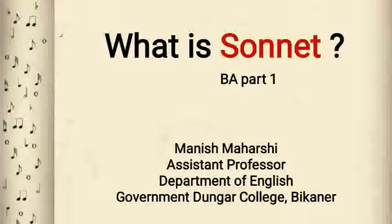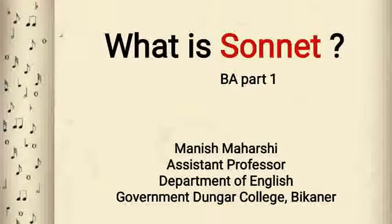The sonnet was introduced in England in the 16th century by Sir Thomas Wyatt and Henry Howard, the Earl of Surrey. These two English poets, after their return from a diplomatic mission in Italy, wrote verses in this form for pleasure. In their hands, however, the form underwent a change, and Surrey in particular adopted a rhyme scheme wildly different from that of his Italian model.